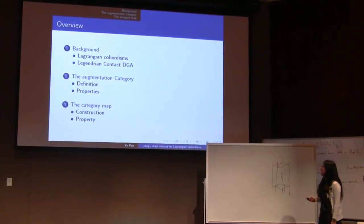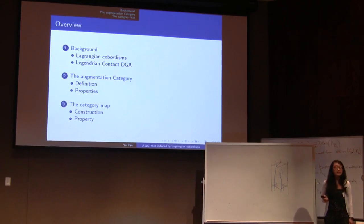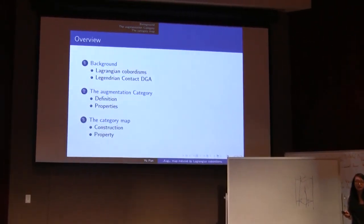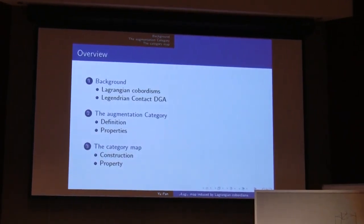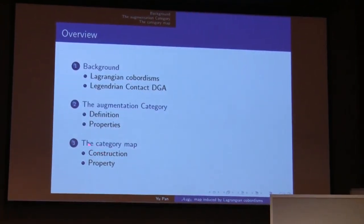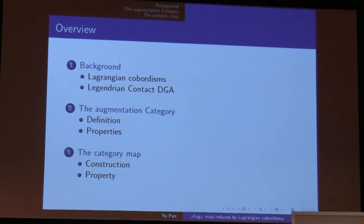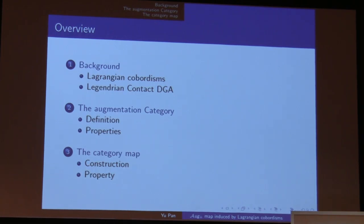Then I'll introduce the augmentation category, which is an invariant of the Legendrian knot that has been recently introduced. A cobordism will actually give us a category map, and we'll show some properties of this category map that will give us some relations between the Legendrian knots.